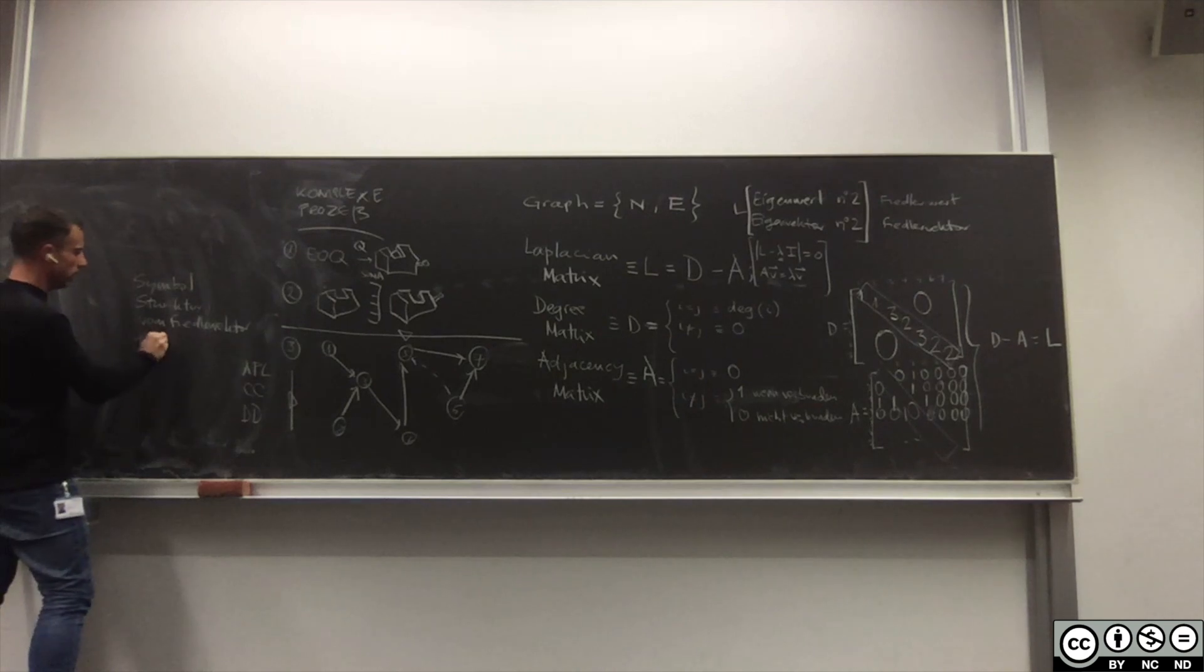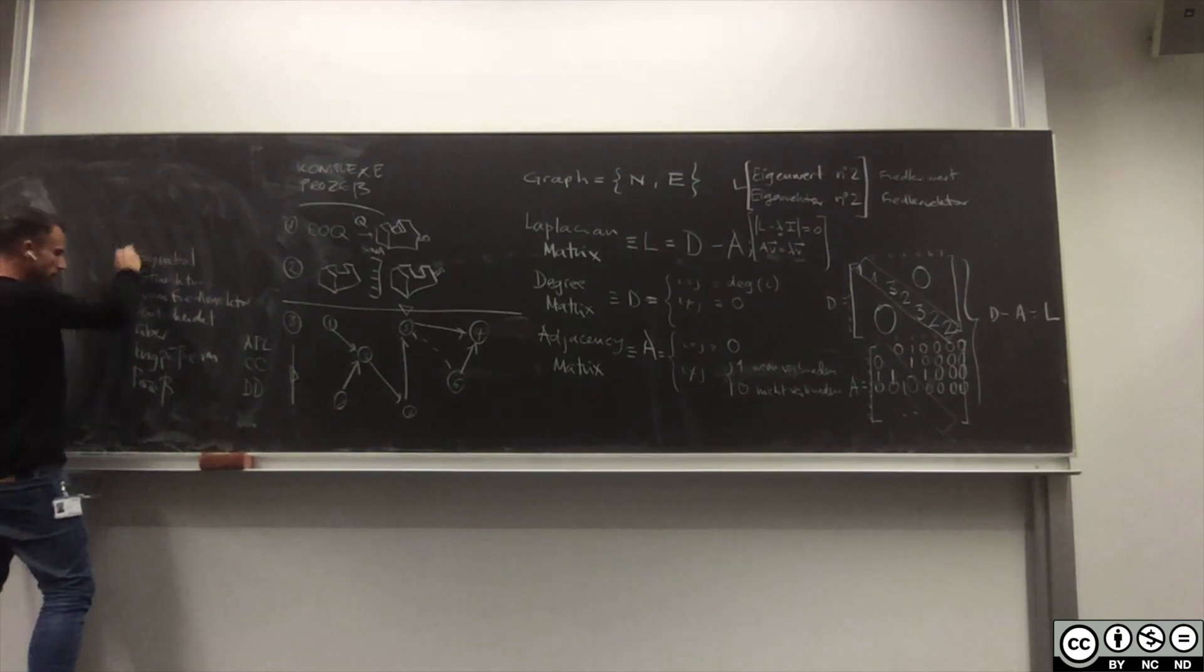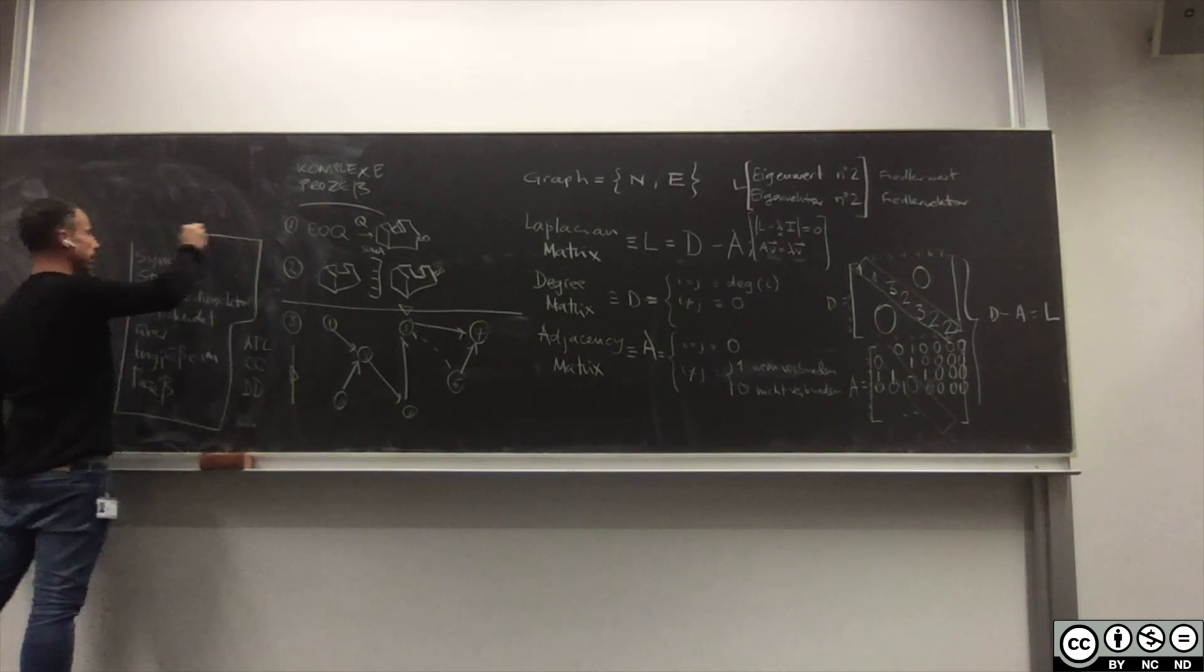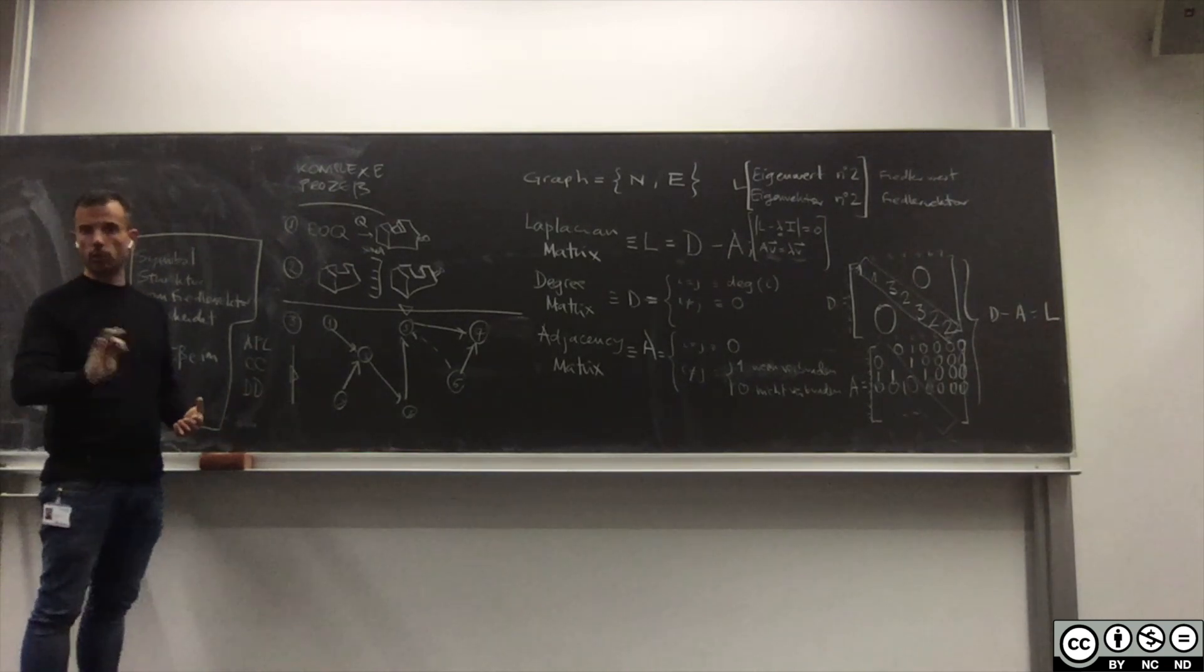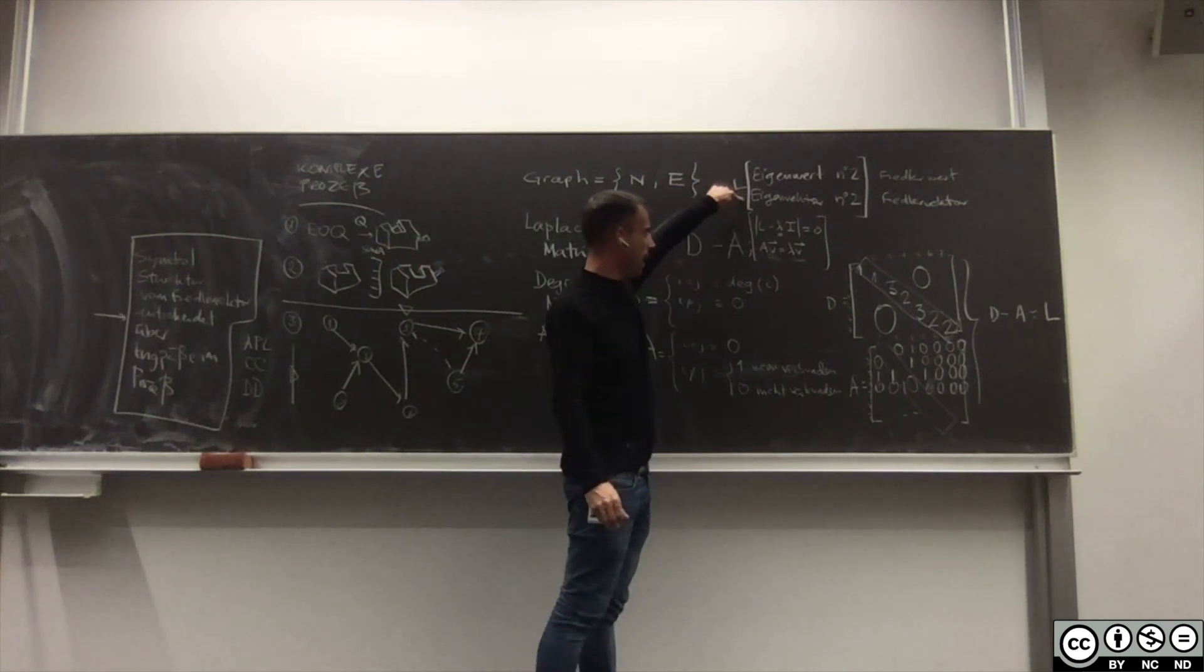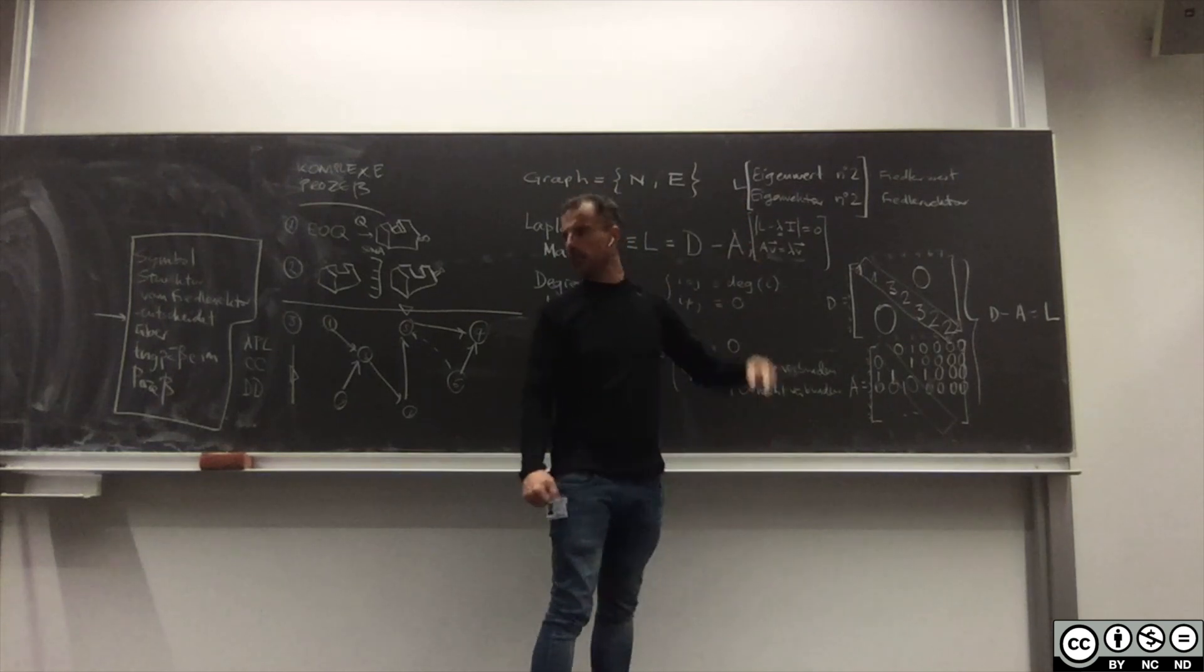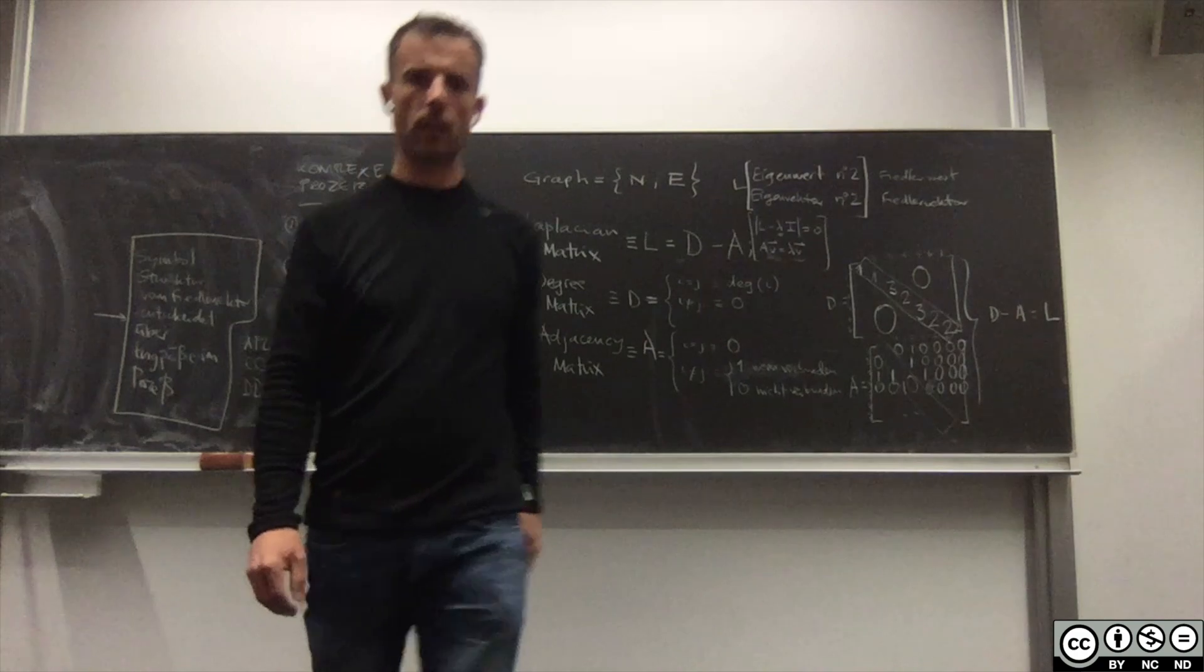Entscheidet über Engpässe im Prozess. Warum? Das hat mit der spektralen Theorie zu tun, ich werde es hier nicht erklären. Nicht notwendig auch zu wissen. Es ist wichtig dass ihr weiß, der zweite Eigenvektor von dem Laplacian Matrix ist entscheidend um Informationen zu geben über den Prozess. So das ist jetzt mal die Theorie. Fragen?